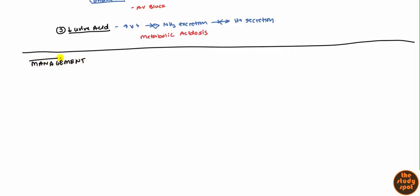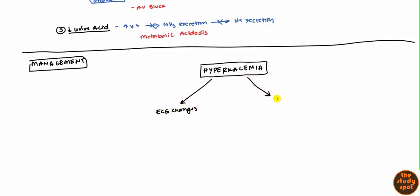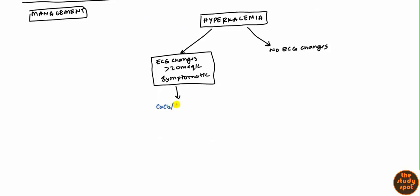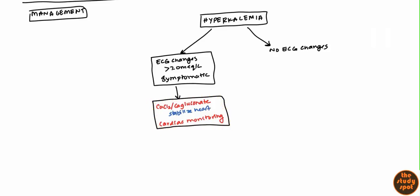The management of hyperkalemia first depends on whether it's symptomatic or not. First, rule out any spurious causes — make sure the blood was drawn correctly and there was no thrombocytosis or leukocytosis. After confirming true hyperkalemia, check whether there are ECG changes. If there are ECG changes, or the potassium is greater than 7.0 mEq/L, or the patient is symptomatic, you need to act right away. First, give either calcium chloride or calcium gluconate to stabilize the heart membrane and prevent ventricular tachycardia or fibrillation. Then put them on cardiac monitoring.